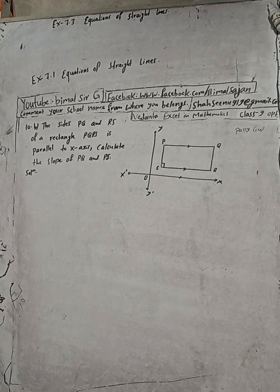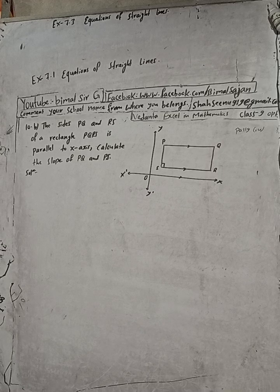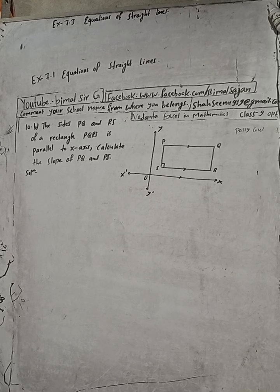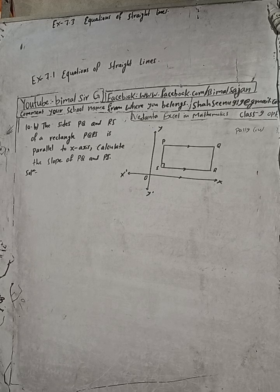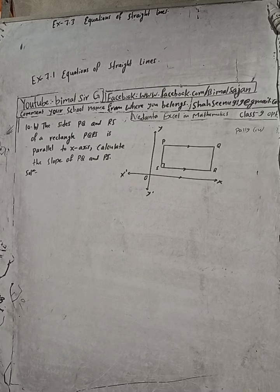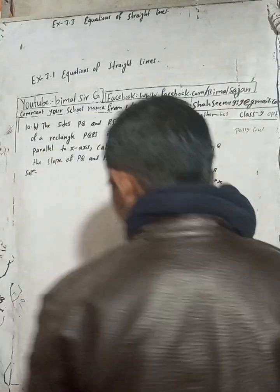Hi class 9 and 10 students. Welcome back to Vimalsarji's YouTube channel. This is question number 10b, Exercise 7.1, Equations of straight lines, Vedant Excel in optional mathematics class 9. 10a is already uploaded and 11 is also uploaded. Check the playlist. Here the question is.